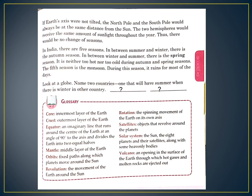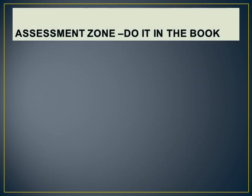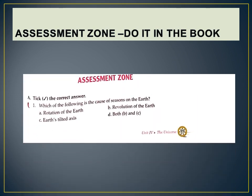Now let us move to the assessment zone. We are going to do the objective type questions. All of you will follow the video and write down the answers in your book, not in the copy. Question 1: Which of the following is the cause of seasons on the earth? Options: (a) rotation of the earth, (b) revolution of the earth, (c) earth's tilted axis, (d) both b and c. The correct answer is option d — both b and c.